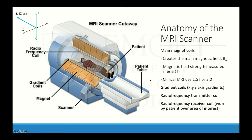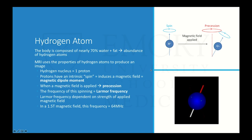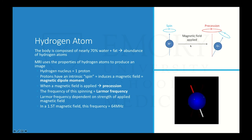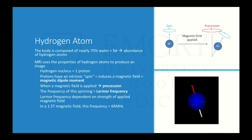The patient is wearing a receiver coil to cover the area of interest. MRI physics really relates to the hydrogen atom. The body is composed of 70% water along with fat, giving us an abundance of hydrogen atoms that can be manipulated with radiofrequency pulses. The hydrogen nucleus contains just one proton, and each proton has its own intrinsic spin — a quantum property that creates a magnetic vector called the magnetic dipole moment. When you apply a magnetic field, it causes that vector to precess in a rotational motion like a spinning top. That frequency of precession is called the Larmor frequency, which in a 1.5 Tesla machine is 64 megahertz.